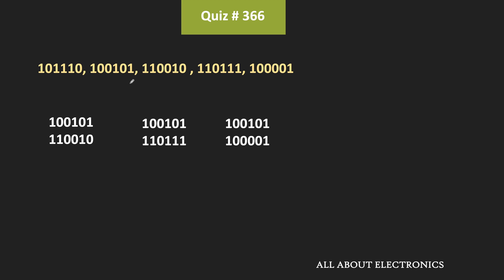Now let us compare the second code word with the remaining three codes. When we compare the second code with the third code, the Hamming distance is equal to 4 because these two codes differ at 4 bit positions.